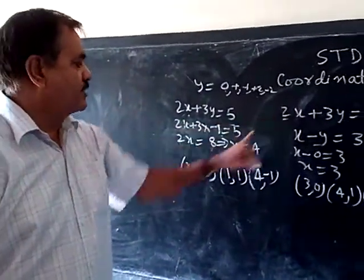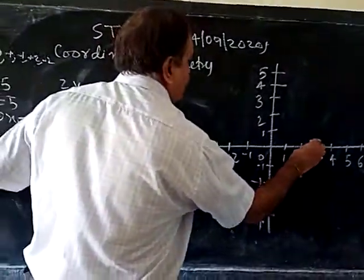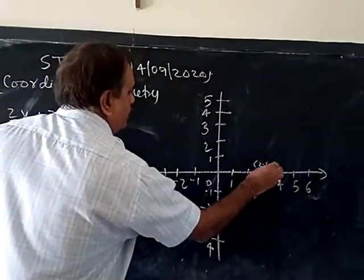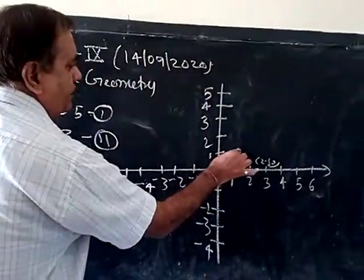So first equation, 2.5. Where is the 2.5? Here. And y probability 0 means this is 2.5, 0. Second coordinate is (1, 1). This is the point.